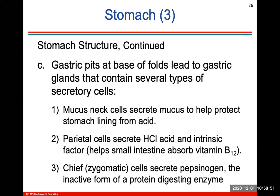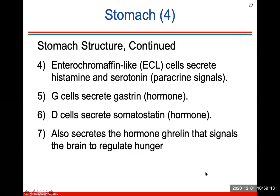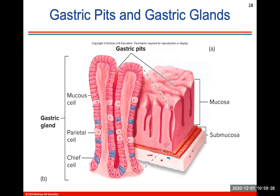Mucus neck cells secrete mucus to help protect your stomach lining from the very acidic environment. Parietal cells secrete HCl (hydrochloric acid) and intrinsic factor, which helps your small intestine absorb vitamin B12. Chief cells secrete pepsinogen, which is the inactive form of a protein-digesting enzyme. The stomach also secretes the hormone ghrelin that signals the brain to regulate hunger.